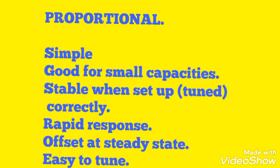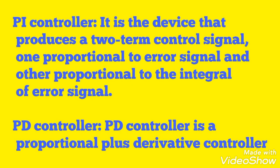Proportional control is simple, good for small capacities, stable when set up, has rapid response, but has offset at steady state and is easy to tune. The PI controller is a device that produces a two-term control signal — one proportional to the error signal and the other proportional to the integral of the error signal.